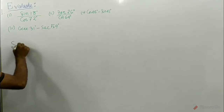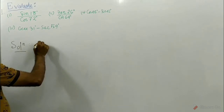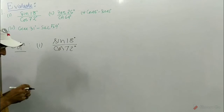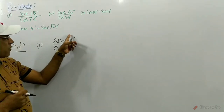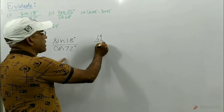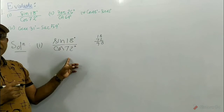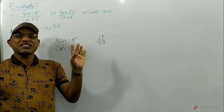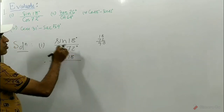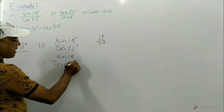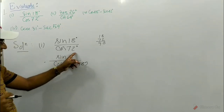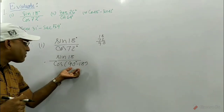First we consider number 1 — these are very easy. Number 1 is sin 18° / cos 72°. For this type of problem, first we have to add the two angles: 18 plus 72, we get 90. Their sum is 90. So we can write cos 72° as cos(90° - 18°), since 90 minus 18 is 72.